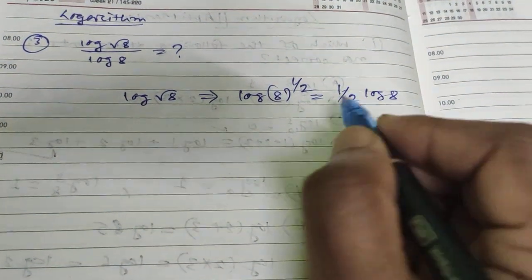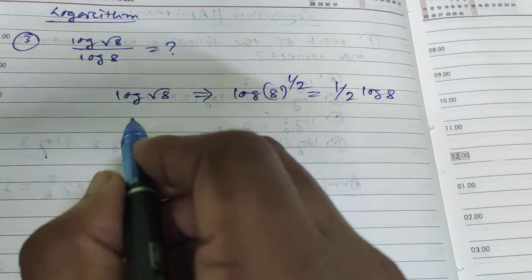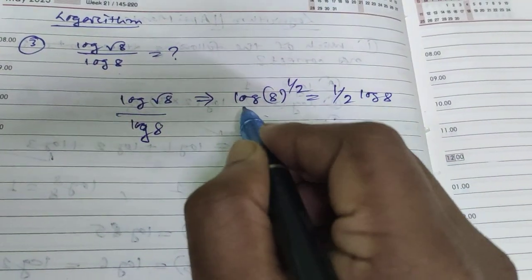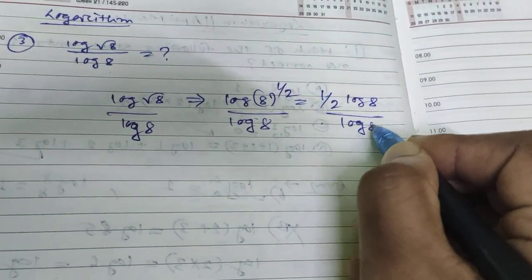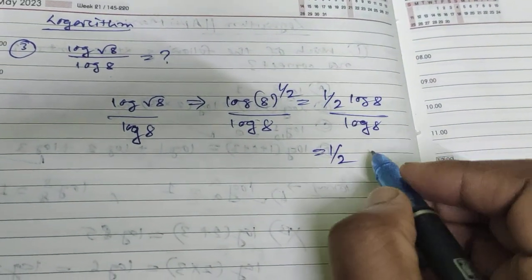Dividing by log 8, we have (1/2 log 8) / log 8. The log 8 terms cancel out, leaving only 1/2. So 1/2 is your answer for this question.